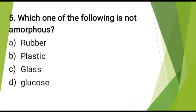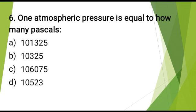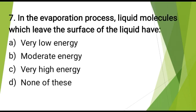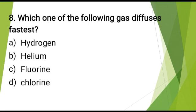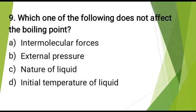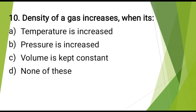Which one of the following is not amorphous? The correct answer is: glucose. One atmospheric pressure is equal to how many Pascals? The correct answer is: 101325. In the evaporation process, liquid molecules which leave the surface of the liquid have? The correct answer is: very high energy. Which one of the following gas diffuses fastest? The correct answer is: hydrogen. Which one of the following does not affect the boiling point? The correct answer is: initial temperature of liquid. Density of a gas increases when it's? The correct answer is: none of these.